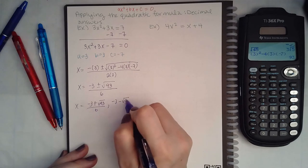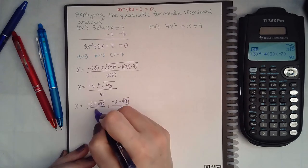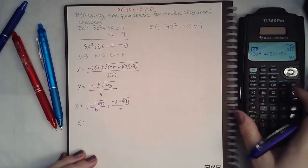When I type in 3 squared minus 4 times 3 times negative 7, I end up with 93 over 6. So remember there's two answers here, one with a plus and one with a minus, and both of these I will need to enter into the calculator.